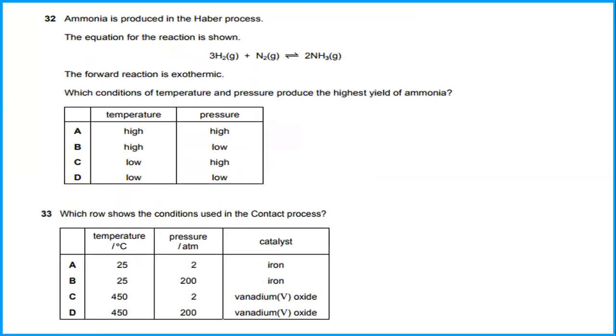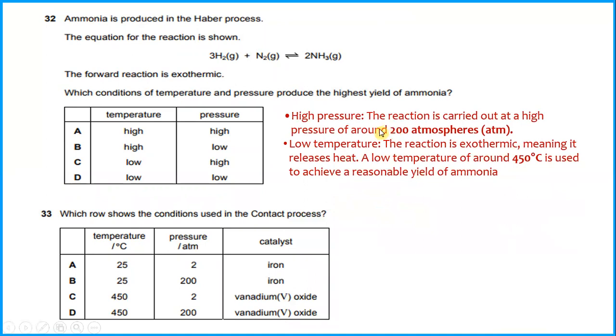Ammonia is produced in the Haber process. The equation for the reaction is shown below and the forward reaction is exothermic. Which condition of temperature and pressure produce the highest yield of ammonia? High pressure - the answer for pressure is very high, which is required around 200 atmospheres - and low temperature. Low temperature because the reaction is exothermic, meaning it releases heat. A low temperature of around 450 degrees Celsius is used to achieve a reasonable yield of ammonia. So the answer will be C. This is a typo mistake, the answer should be C.